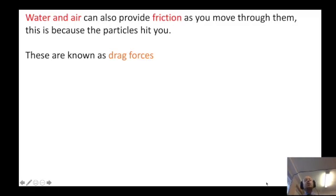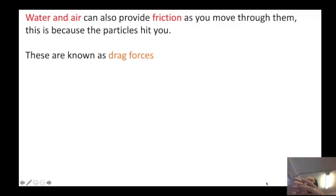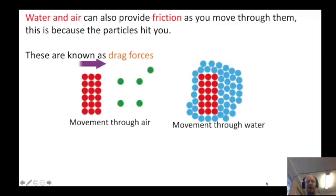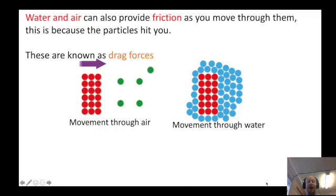Water and air can also provide a sort of friction as well. As you move through water or air, the particles of those fluids will hit you, and because they're hitting you, that's providing what we call a drag force. If this red object is the object I'm trying to move through, when I move through the air, the object is going to hit the air particles and those particles will slow you down. These are known as drag forces.